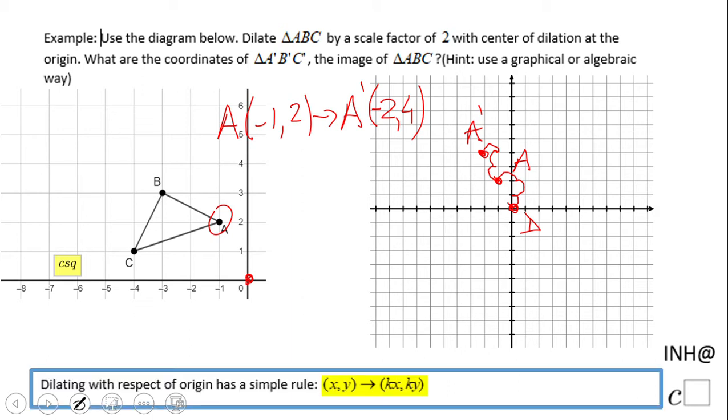So B, which is negative three and three, becomes what? B prime. And if you notice here, you need to multiply by the scale factor.